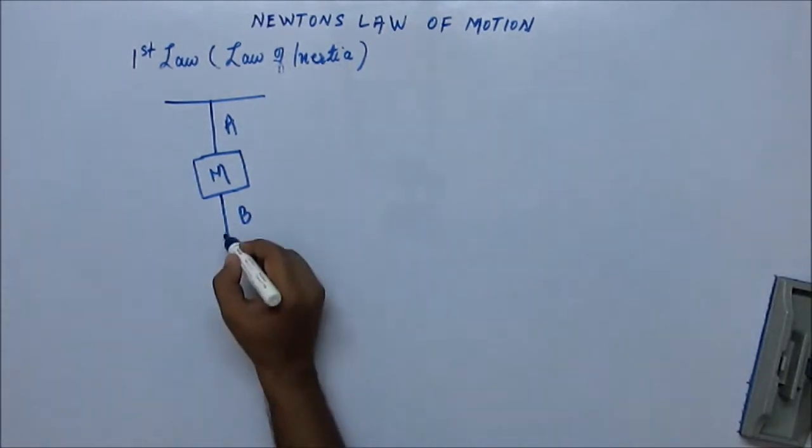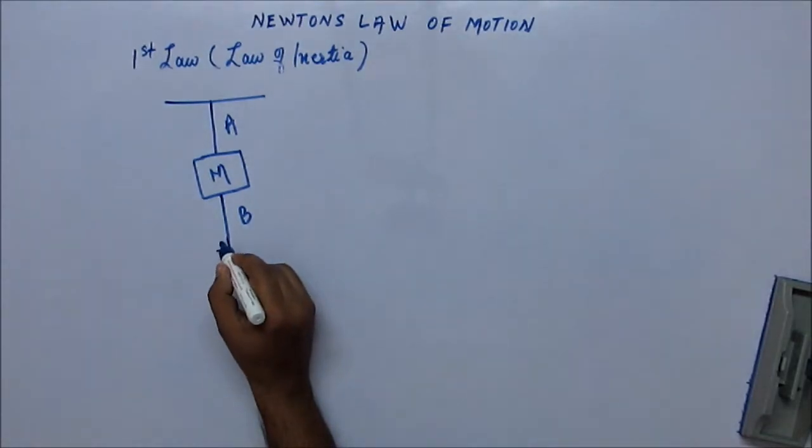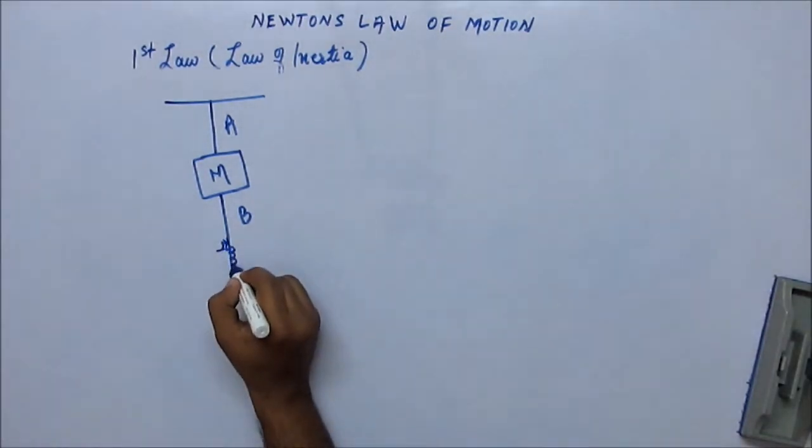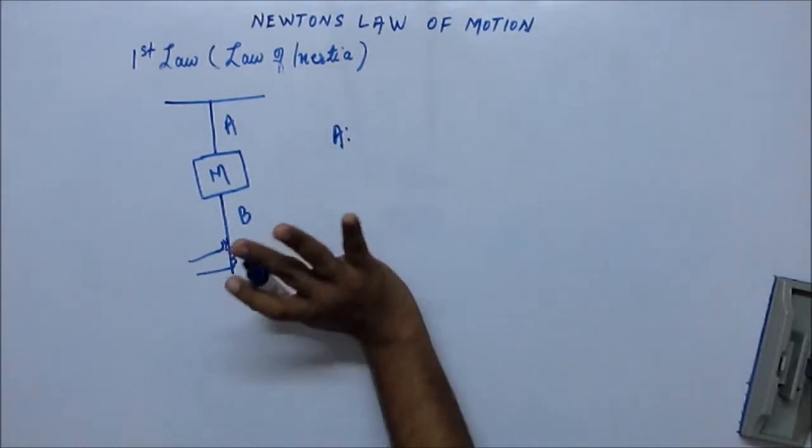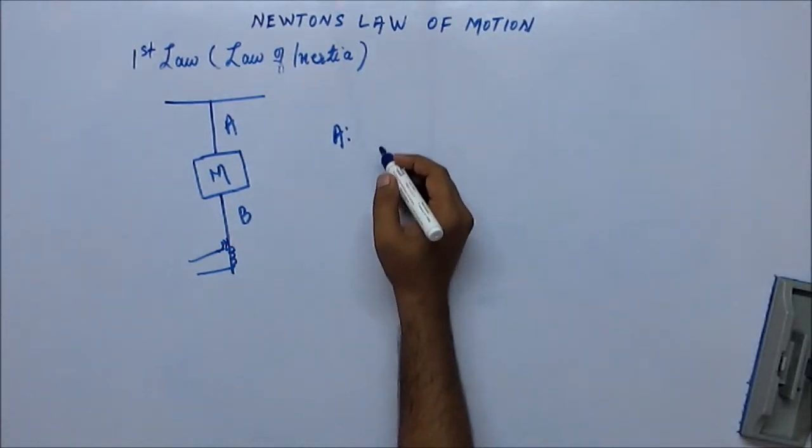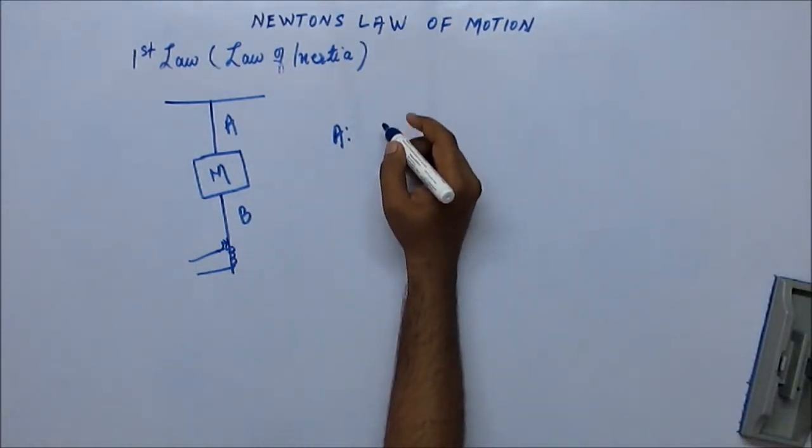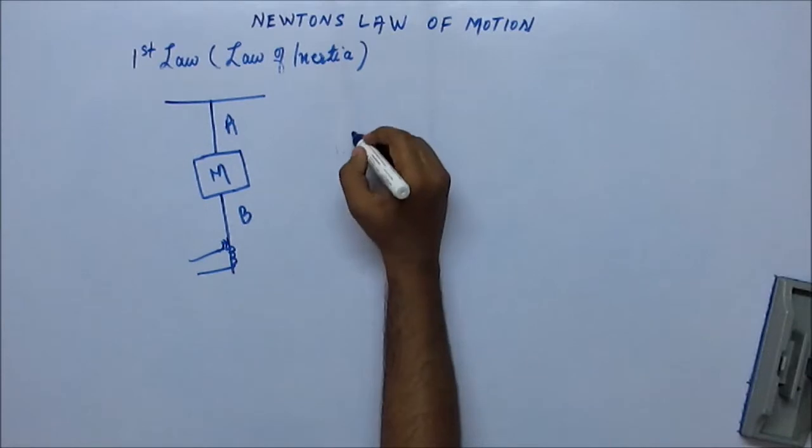So this is the system and you come and you try to pull the string B. I'm doing two statements, think about both the statements and statement A or statement one is,